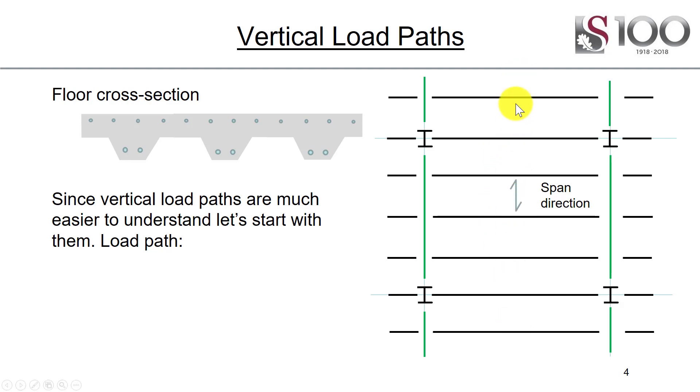The load will span this way from beam to beam to beam, and then the beams will carry it to the primary beams or girders, and then through to the columns, and then down to the foundations. So we need a load path. So let's say a small load is applied there or there or there or wherever it is. How is it going to get to the foundation?